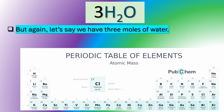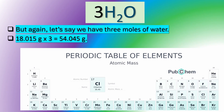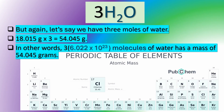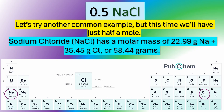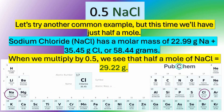Let's say we have 3 moles of water: 18.015 grams times 3 equals 54.045 grams. In other words, 3 times 6.022 times 10 to the 23rd power molecules of water has a mass of 54.045 grams. Let's try another example, but this time we'll have just half a mole. Sodium chloride, NaCl, has a molar mass of 22.99 grams of sodium plus 35.45 grams of chlorine, or 58.44 grams. When we multiply by 0.5, we see that half a mole of NaCl equals 29.22 grams.